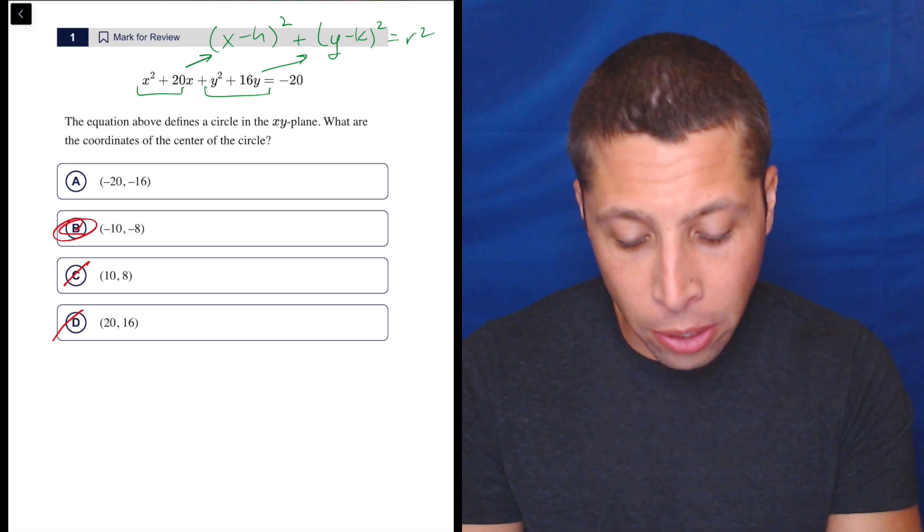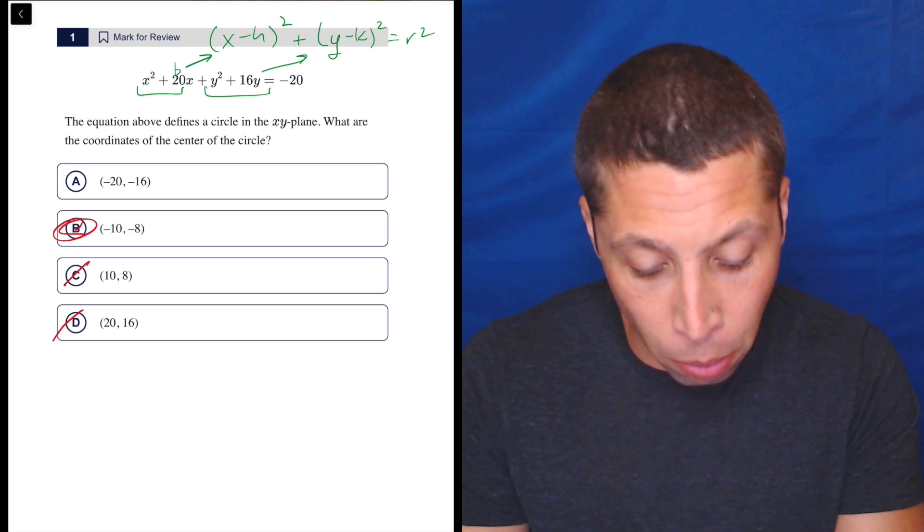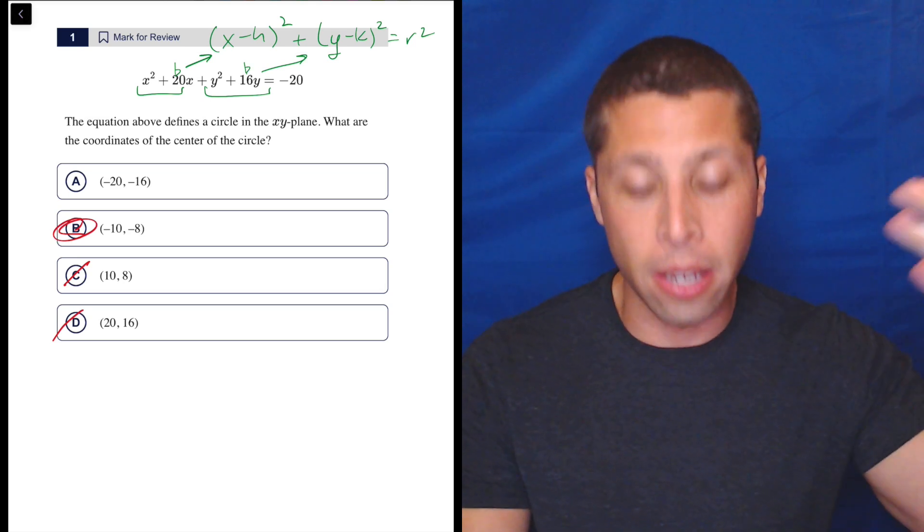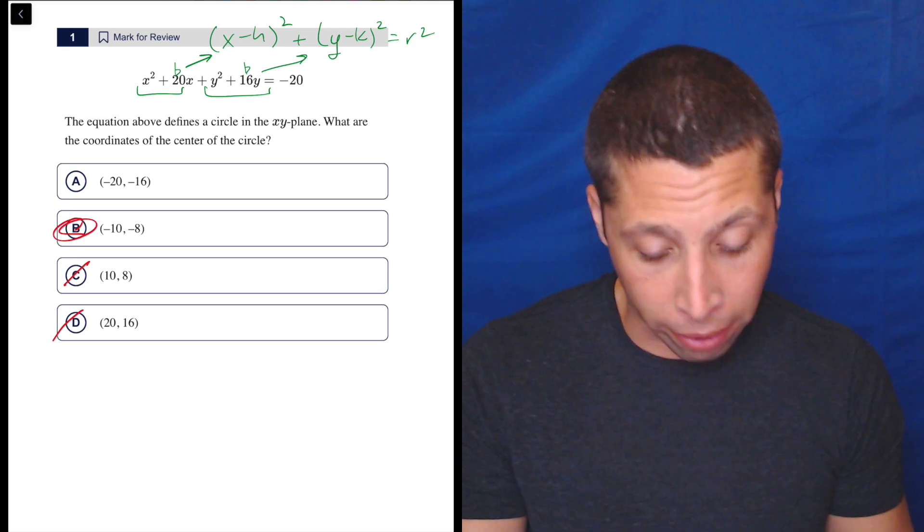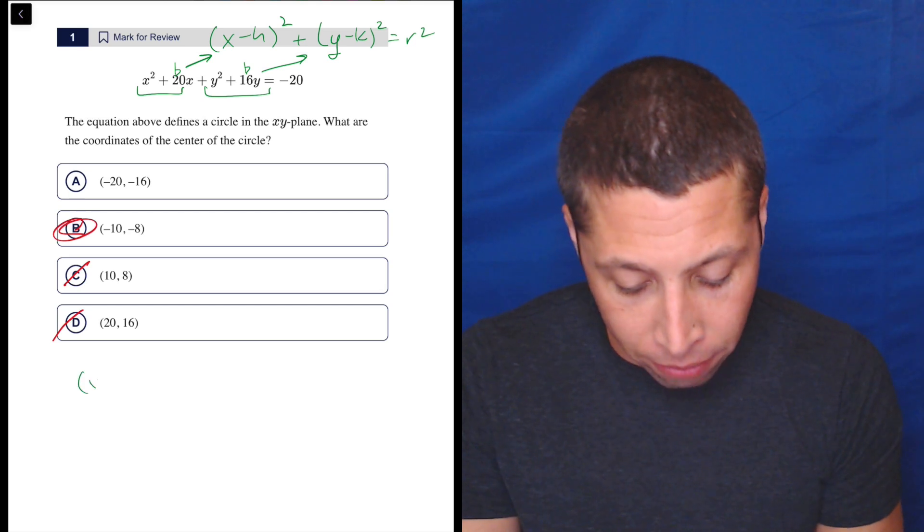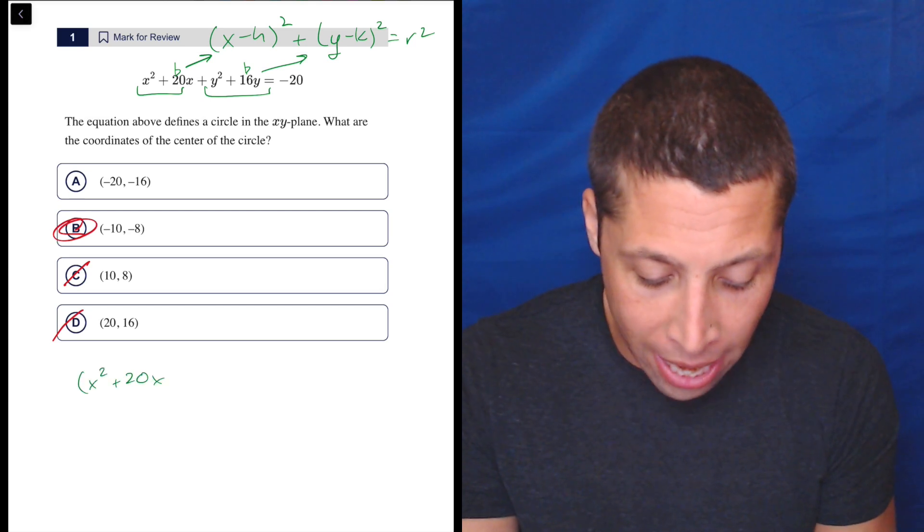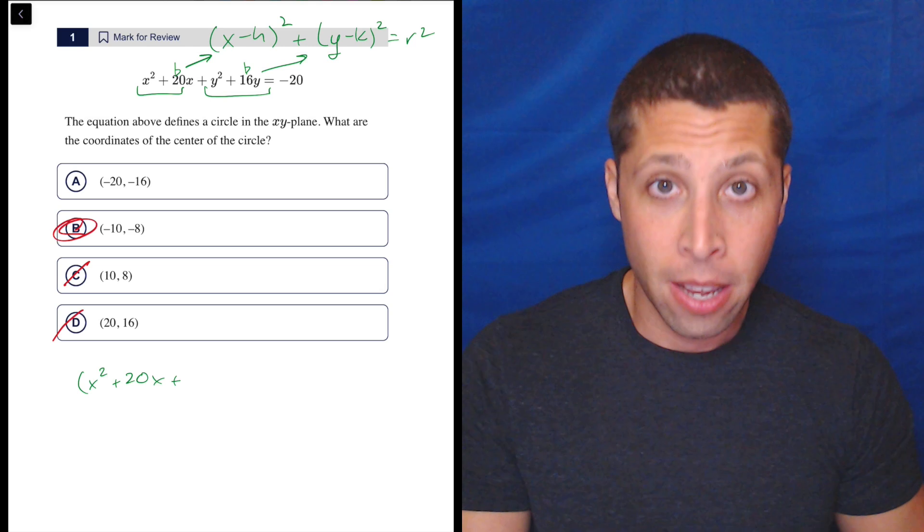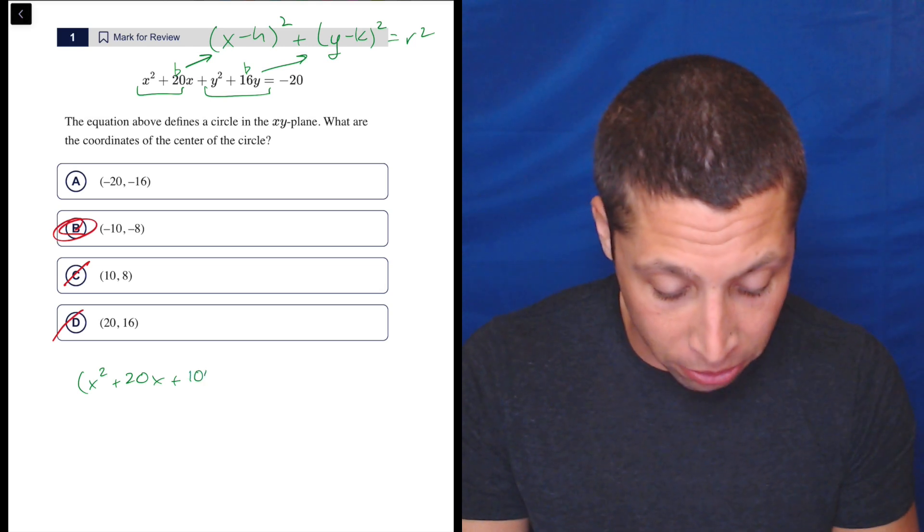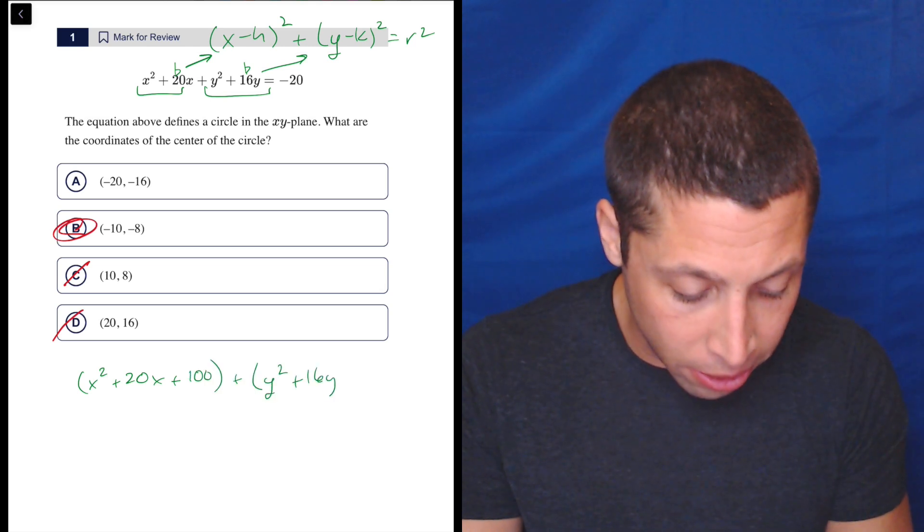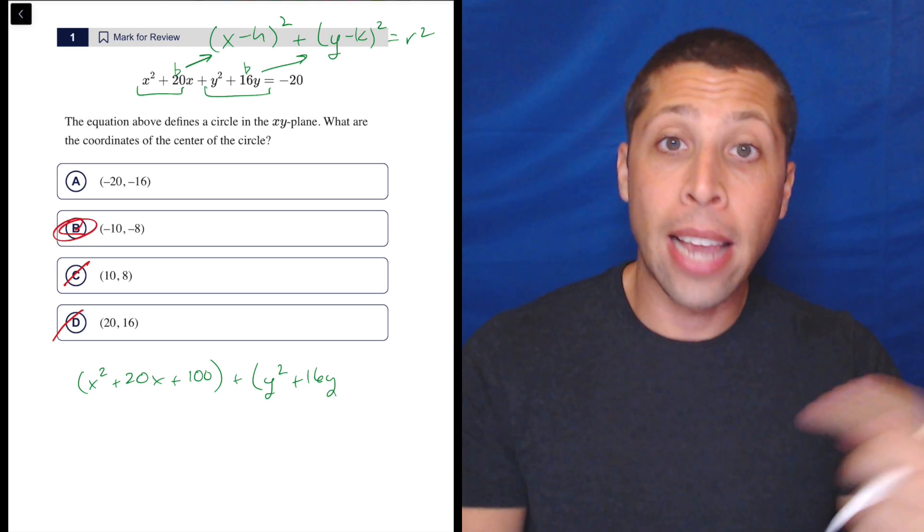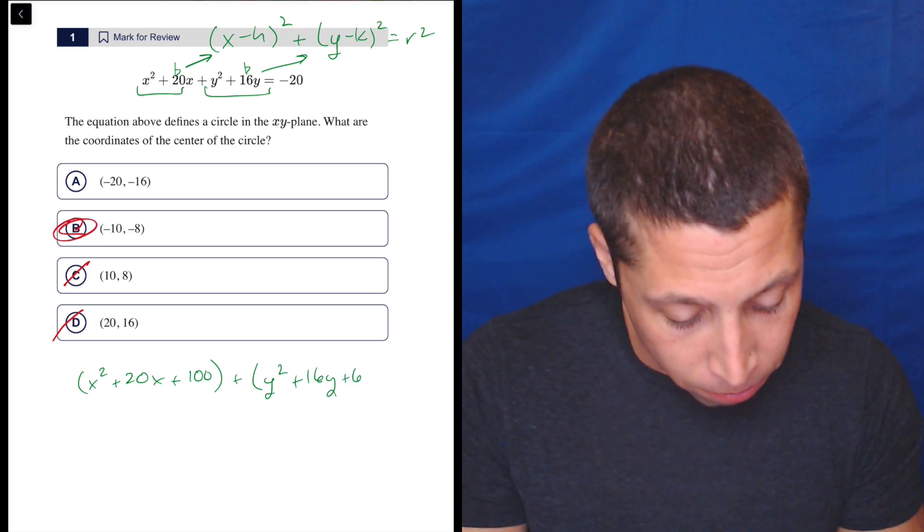So the process for doing that is to focus on the b term, which in both cases is the part on the single x, the single y. We're going to take half of that and square it and then add it in. So we're going to have x squared plus 20x plus half of 20 is 10 and 10 squared is 100. So plus 100. Then we'll do it for the y. So y squared plus 16y. Half of 16 is 8. 8 squared is 64. So that gets in.